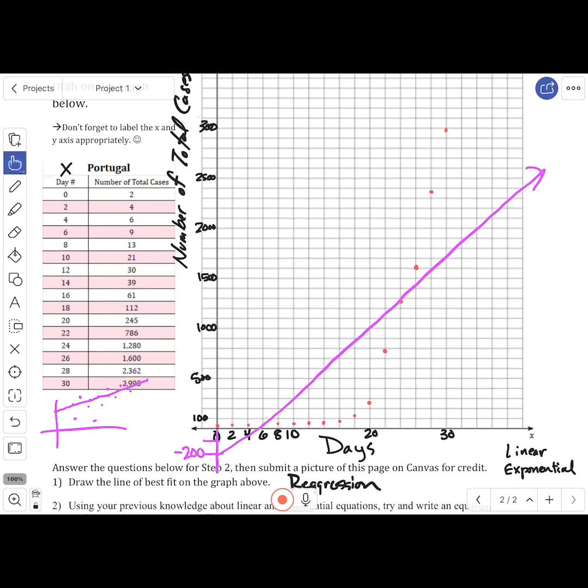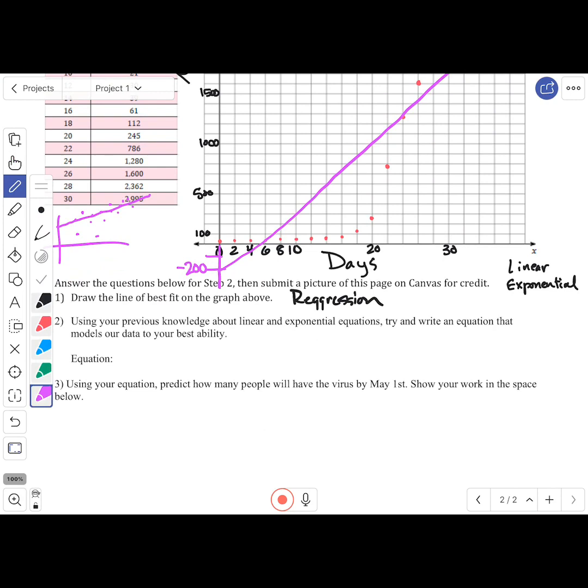If I'm doing a linear one, I kind of need to split my data. Maybe I would draw it, and I might have to start down lower than my graph actually goes. Maybe it'd look more like this - a straight line, something like that. I'd probably start at negative 200, and then I'd kind of just estimate how it's growing. Remember, slope is rise over run.